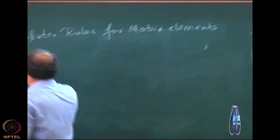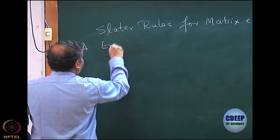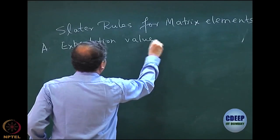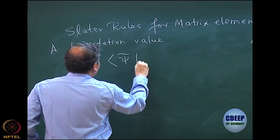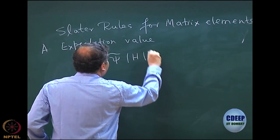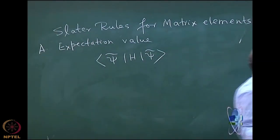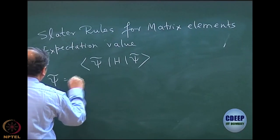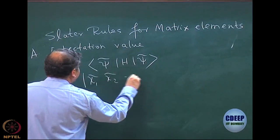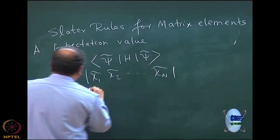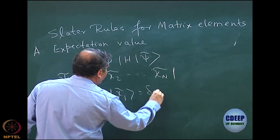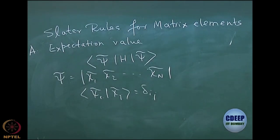The first rule, A, concerns the expectation value. In the matrix element, the expectation value means both sides are identical — left and right are identical. I am assuming that they are all an orthonormal set, so all the rules are derived using an orthonormal set. So psi-tilde is chi_1-tilde, chi_2-tilde, ..., chi_n-tilde, and chi_i-tilde, chi_j-tilde equals delta_{ij}.